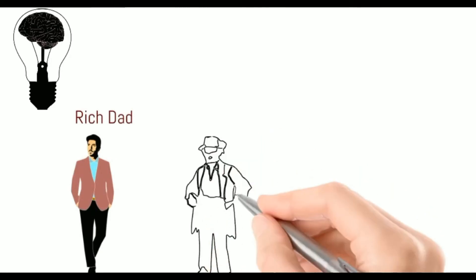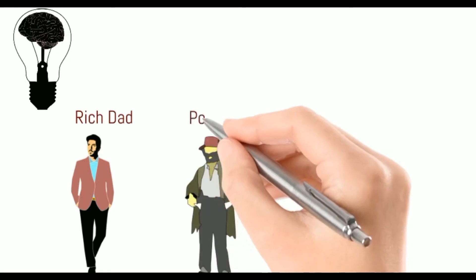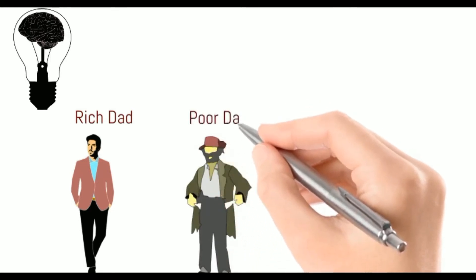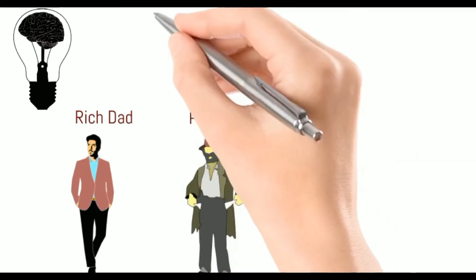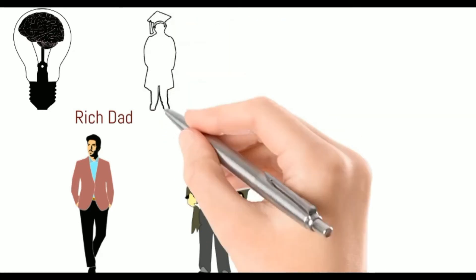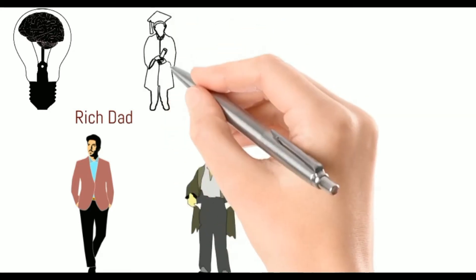The poor dad told Robert that love of money is the root cause of all problems and advised Robert not to think about expensive things at all, saying that expensive things make us greedy.